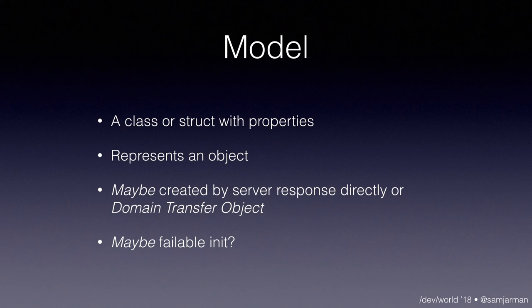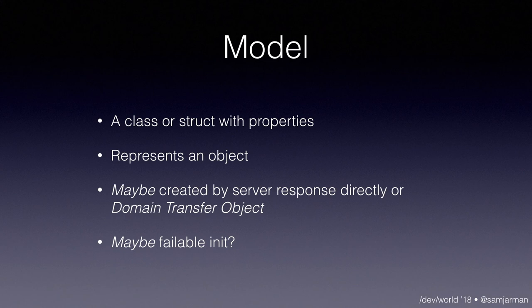The provider essentially abstracts the source of truth. It may create a CRUD interface for talking to a RESTful API, abstract away a database, or read from user defaults. Either way it takes that data and constructs the models, passing them back to the presenter as a list of objects. A model represents a real-world or non-real-world object with properties. It can be created via a DTO, domain transfer object, Codable, or a dictionary. A failable init is a really good pattern here — a server may break its contract, and your app needs to decide what to do with a nil object that failed to create from the server response.